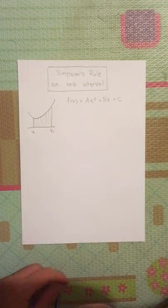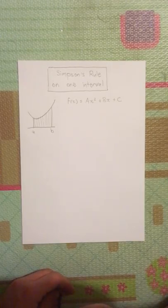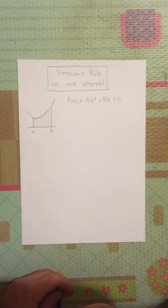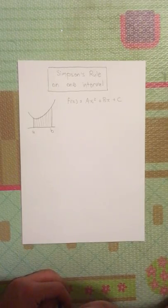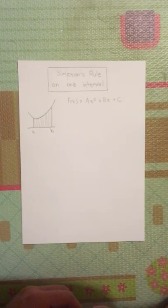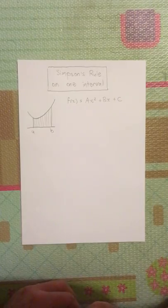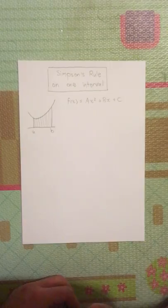I'm going to derive Simpson's rule on one interval. Simpson's rule is about approximating the areas under curves using quadratic approximations. So we have a curve that goes between a few points and we put a parabola there, a piece of a parabola there, and we find the area of that parabola instead. The reason it works the way it does is because the calculation produces the exact correct area if your function really was a parabola.